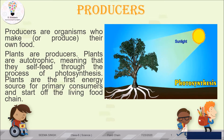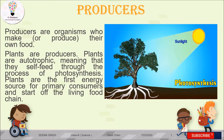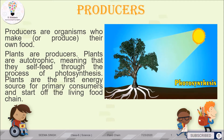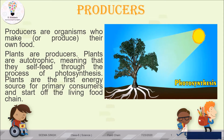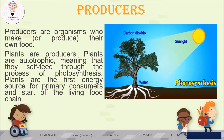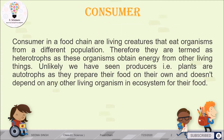Starting with the term 'producer' — producers are organisms who make or produce their own food. We all know that plants make their own food with the help of a process called photosynthesis. This is why plants are also called autotrophs, which means they self-feed through photosynthesis. Plants are the first energy source for primary consumers, and all food chains in the ecosystem start with producers — that is, plants.